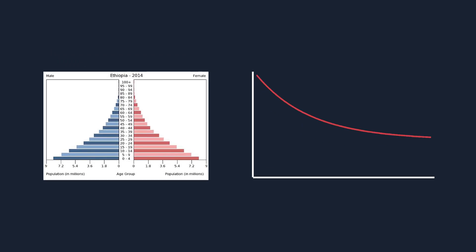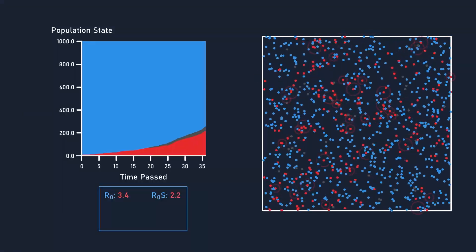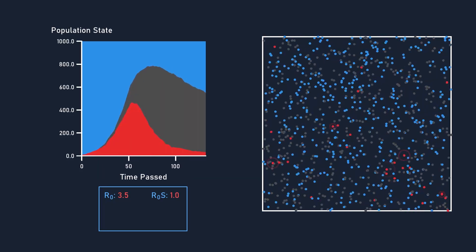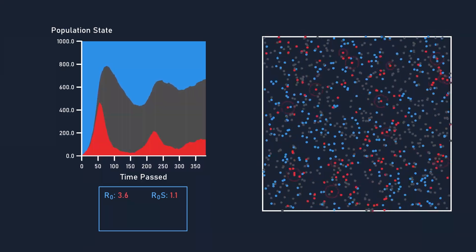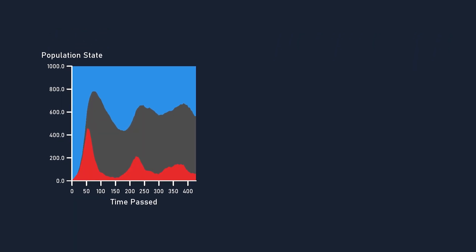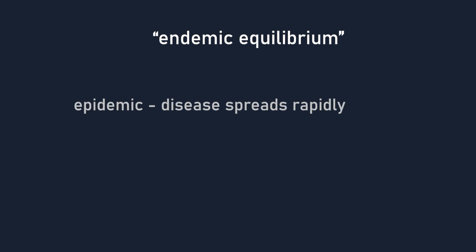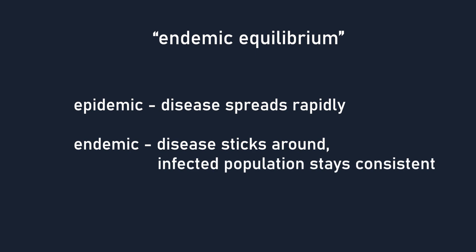More importantly, the reason we want to distribute age this way is that some of the applications we'll cover later only work with an exponential age distribution. When we run the simulation, the infectious and recovered population begin to decline after the first wave due to the new susceptible births. However, after a period of time, the remaining infectious people start spreading the disease again in more waves, each wave smaller than the previous one. The state of the population is oscillating back and forth in a damped oscillation curve, converging to what is known as an endemic equilibrium. As opposed to an epidemic where the disease rapidly spreads, an endemic involves a disease that stays present in the population long-term with an infected population that more or less stays consistent.